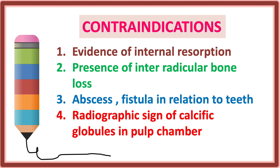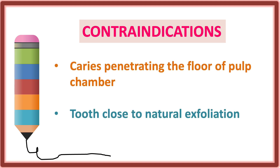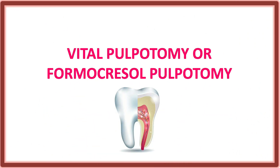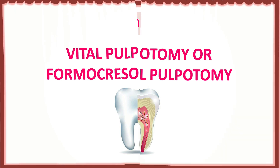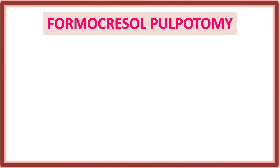Contraindications of vital pulpotomy: evidence of internal resorption, presence of interradicular bone loss, abscess or fistula in relation to the tooth, radiographic signs of calcific globules in the pulp chamber — in any pathological condition, vital pulpotomy is contraindicated. Additional contraindications include caries penetrating the floor of the pulp chamber and a tooth close to natural exfoliation.